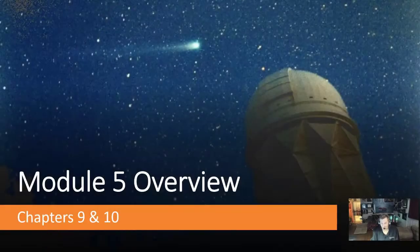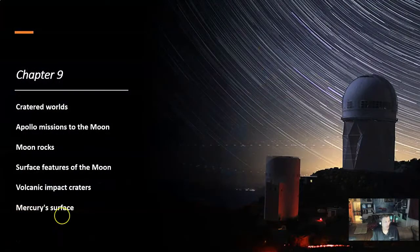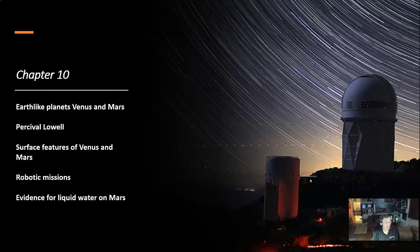This is the Module 5 Overview covering Chapters 9 and 10. Chapter 9 will cover Cratered Worlds, Apollo Missions to the Moon, Moon Rocks, Surface Features of the Moon, Volcanic Impact Craters, and Mercury's Surface.